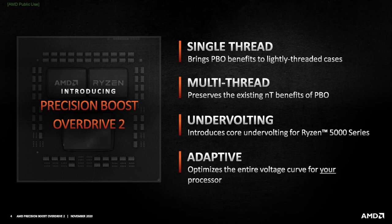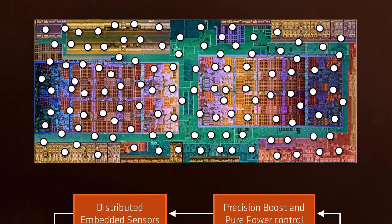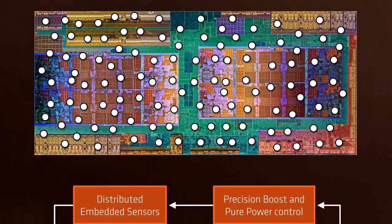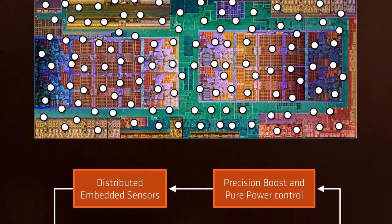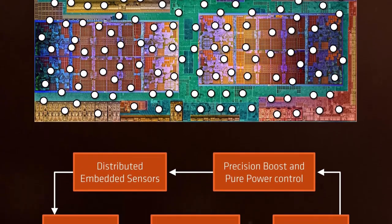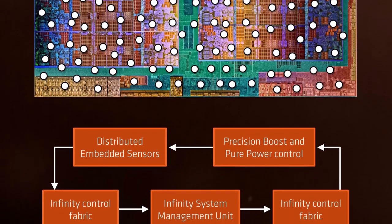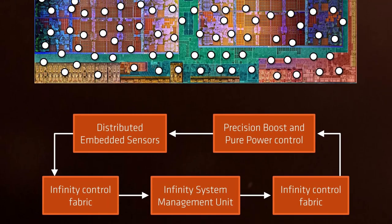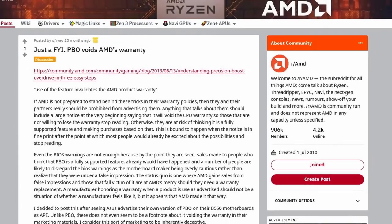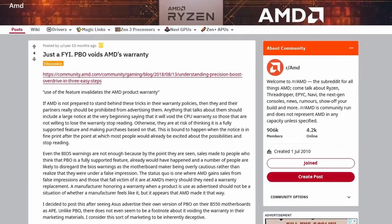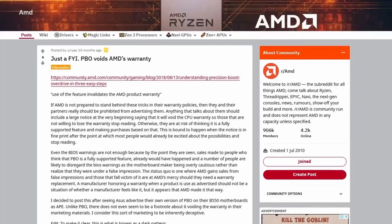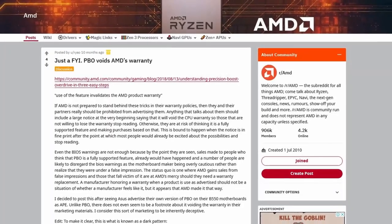That is not the case with manual overclocking, where typically the user must sacrifice a lot of single-core frequency. Precision Boost Overdrive uses a proprietary algorithm with inputs from plenty of sensors inside the CPU to determine the optimal frequency and voltage at any given time. It is important to mention that using Precision Boost Overdrive is a form of overclocking and is therefore not covered by warranty.